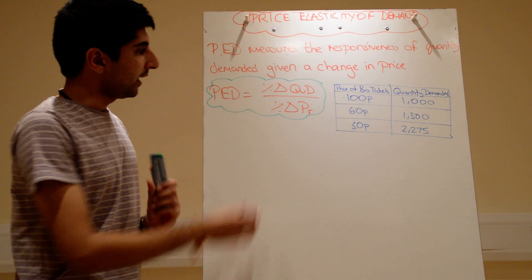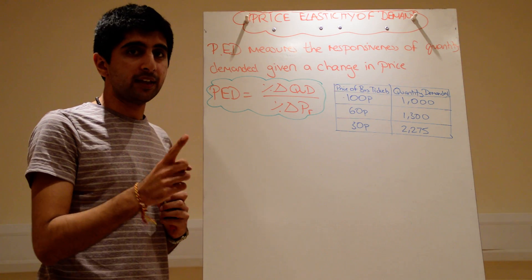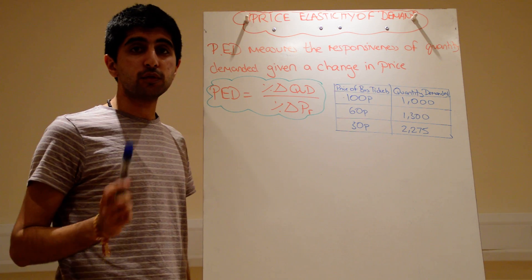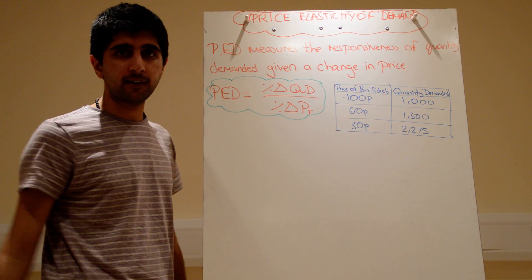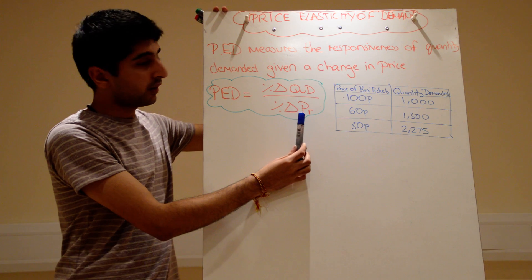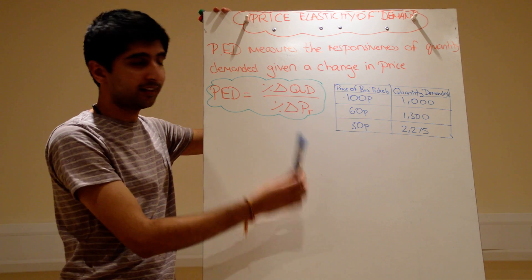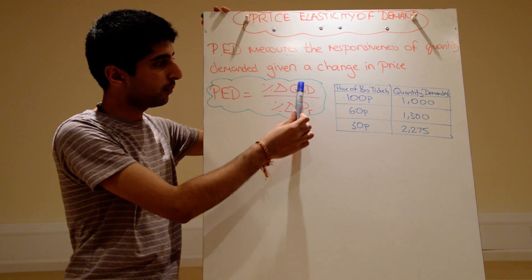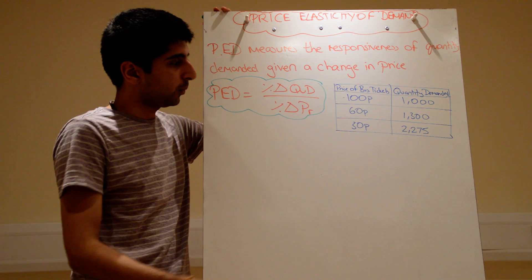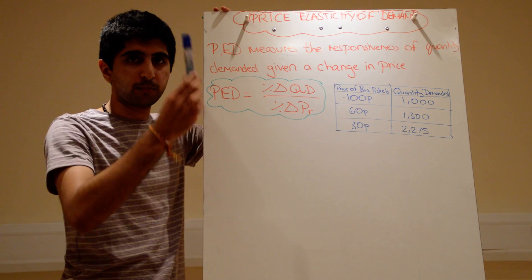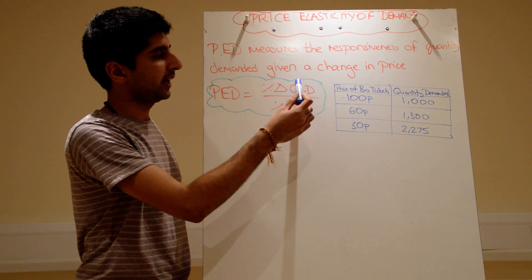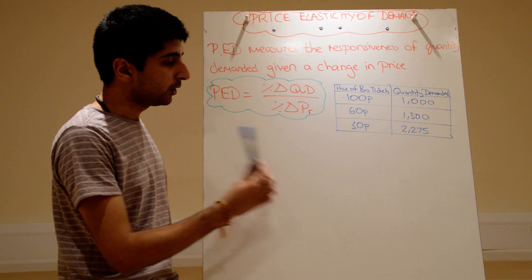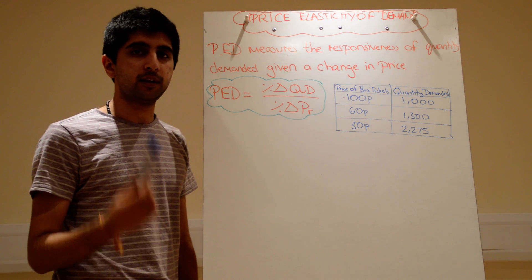One thing to note is that the PED value will always be negative. Why? Because there's an inverse relationship between price and quantity demanded. When the price falls — negative — quantity demanded will be positive, it will increase. Negative divided by positive gives a negative number. Whereas when the price goes up — positive — quantity demanded will fall, that will be negative. Positive divided by negative again gives a negative number. So your PED number will always be negative because of the law of demand.